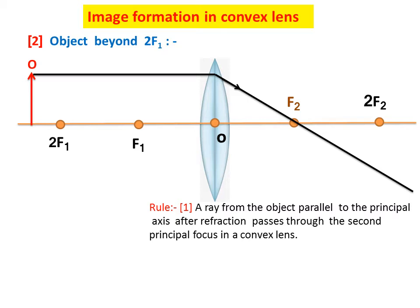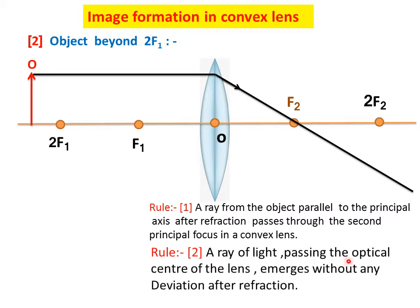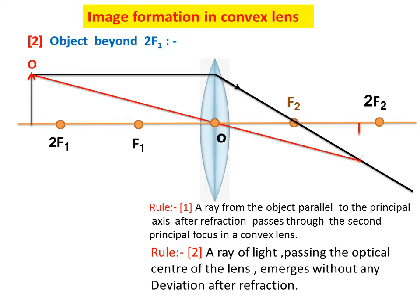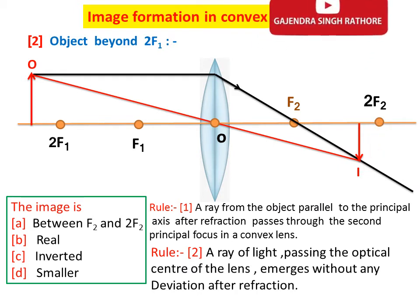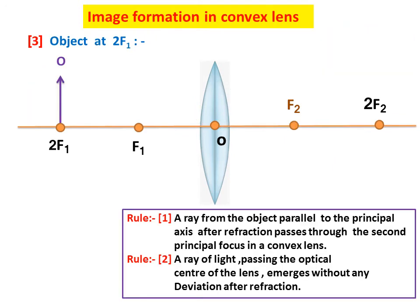For the second line we use rule number 2: a ray of light passing through the optical center of the lens emerges without any deviation after refraction. Both lines intersect and we get image I of object O. The image is between F2 and 2F2 — it is real, inverted, and smaller than the object.